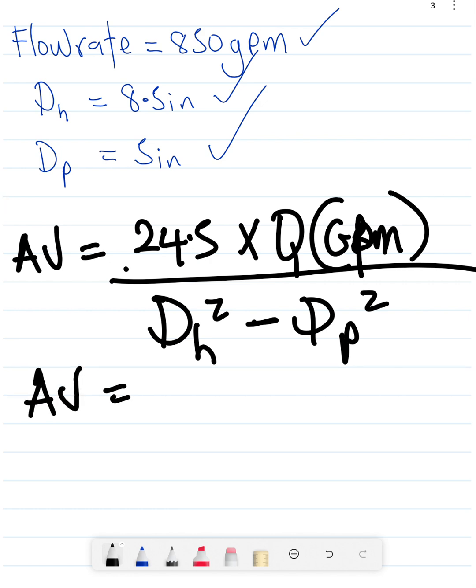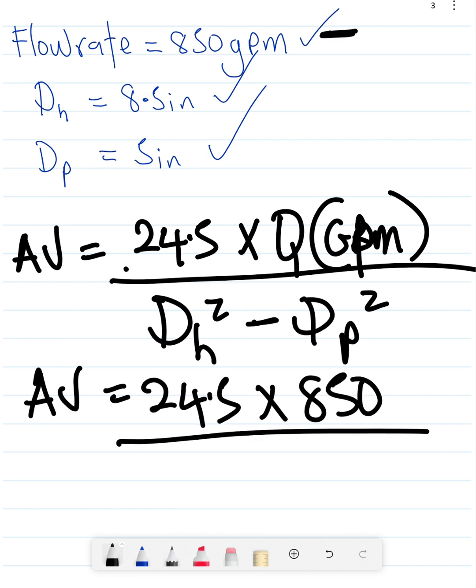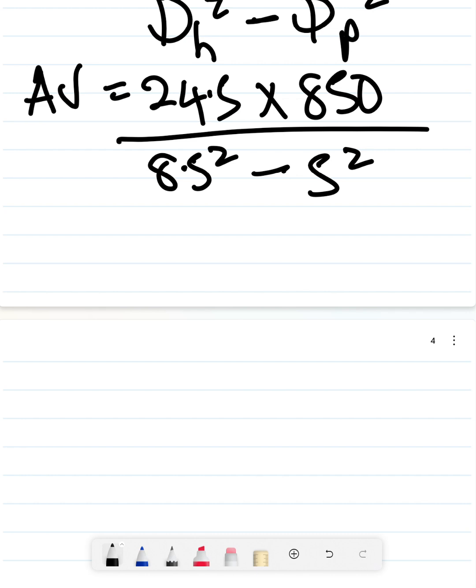Your annular velocity is going to be 24.5 times 850, because that's your flow rate, divided by 8.5 squared minus 5 squared. So when you do your numbers, annular velocity is going to equal...